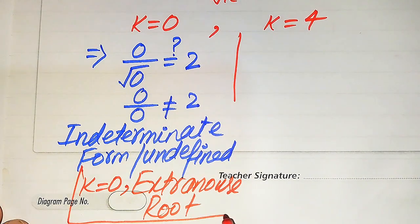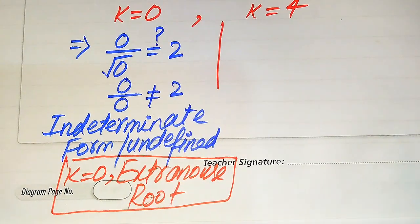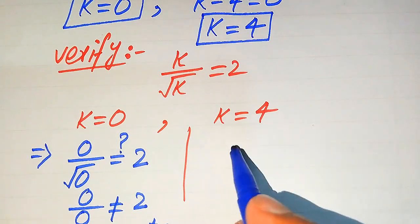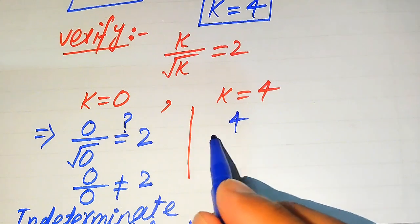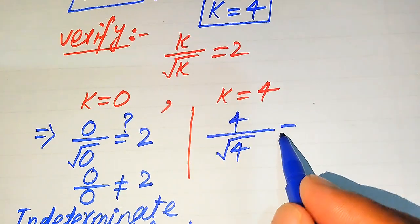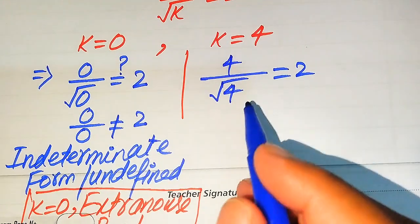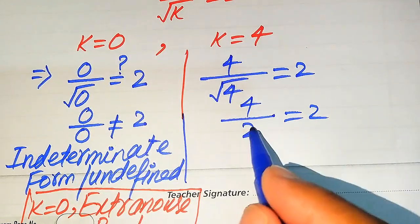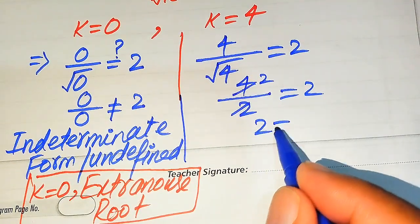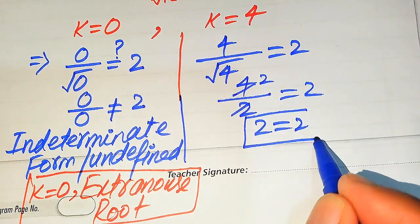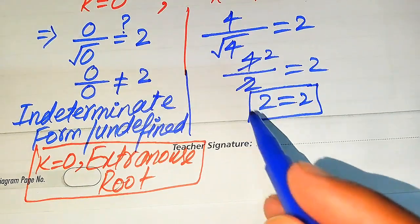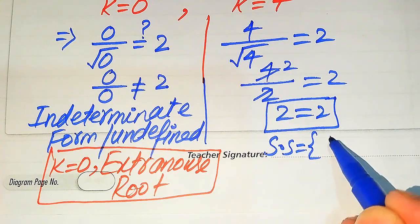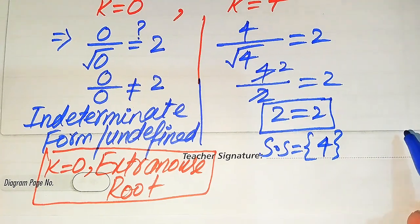For the second case, we put k equals 4 into the left hand side: 4 divided by square root of 4 equals 2. Since square root of 4 is 2, we get 4 divided by 2 equals 2, which simplifies to 2 equals 2. This shows that k equals 4 satisfies the given equation, so k equals 4 is the solution set of the given equation.